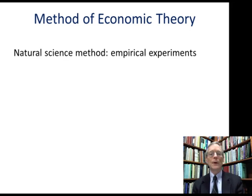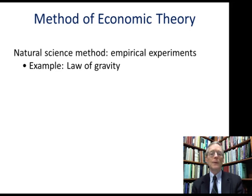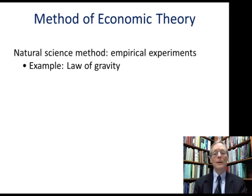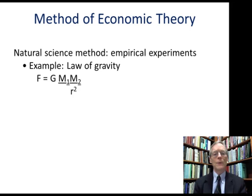Let's take an example of the natural science method. You may remember reading about how Galileo purportedly tested an implication of the law of gravity by dropping objects of different mass off the Leaning Tower of Pisa. He described gravity with the formula: force equals a gravitational constant multiplied by the product of the masses of two objects — m1 being the dropped object, m2 being the Earth — divided by r squared, the so-called inverse square law.